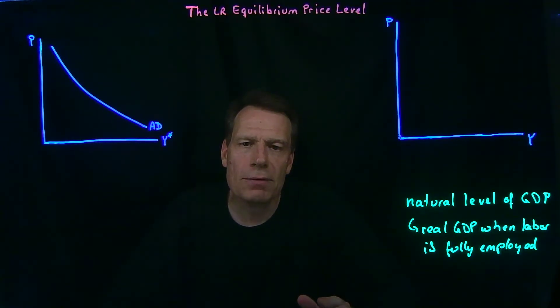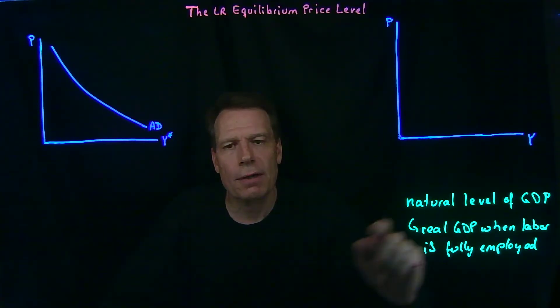Now there's good reason to believe that in the long run, the economy will reach the natural level of GDP. Because in the long run, we're beyond the time period where a recession matters, where there's unemployment. So in the long run, we'll reach that natural level of GDP.